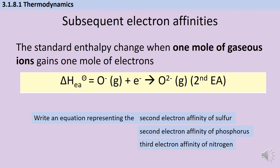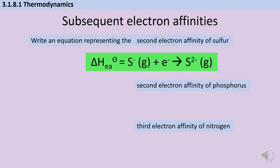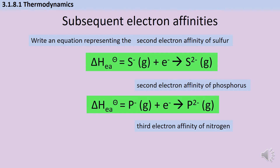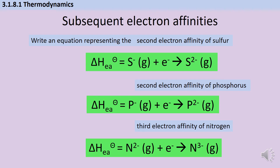For the second electron affinity of sulfur we finish with S²⁻, for the second electron affinity of phosphorus we finish with P²⁻ because it's gained two electrons, and for the third electron affinity of nitrogen we gain just that third electron to give N³⁻.